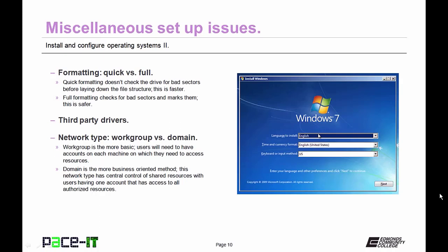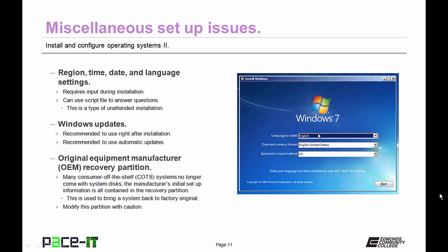You'll need to decide on the type of network setup: workgroup or domain. The workgroup is the most basic — users need accounts on each machine they need to access. A domain is more business-oriented with central control of shared resources, where a user has one account that grants access to all authorized resources. When setting up a PC, remember you need to know the region, time, date, and language settings — these are required inputs during installation, and you can use a script file to answer these questions.